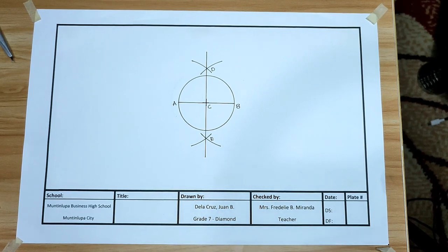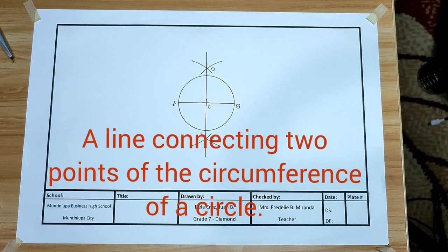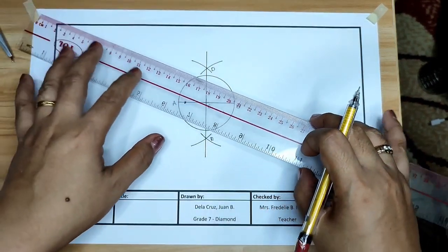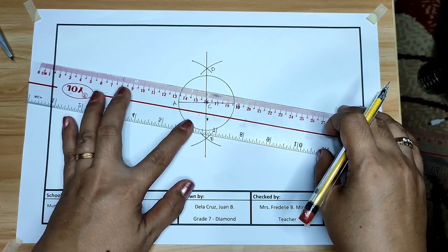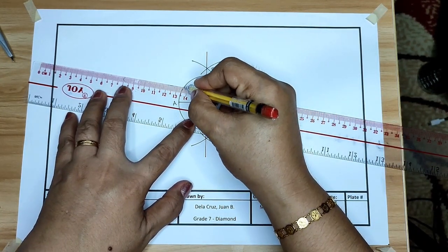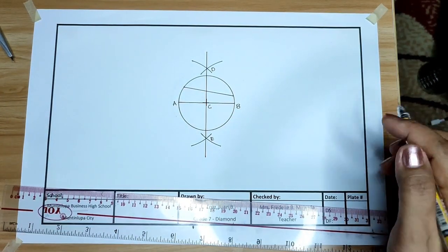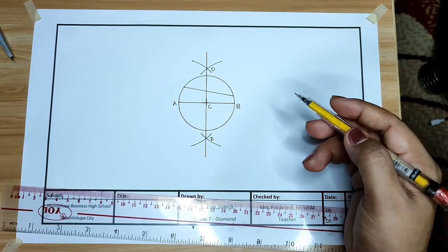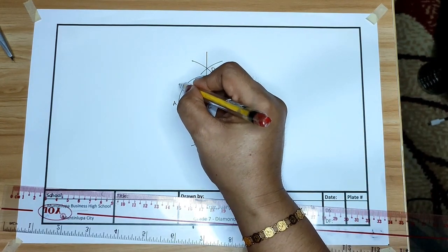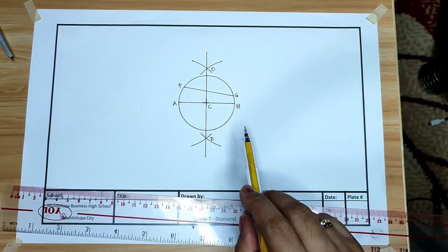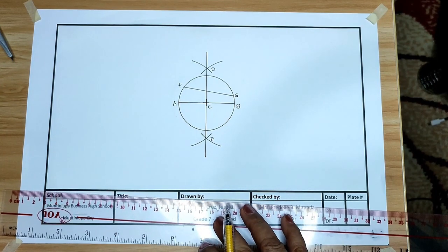Let's proceed to chord. Chord is a line connecting two points on the circumference of the circle. Let's draw a chord. That is chord. Let us name this point F and point G. Point F and G, that is the example of chord.